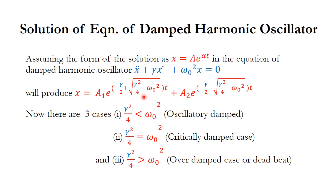Now there are three possibilities. When the term gamma²/4 minus omega_0² is positive, the square root gives a positive value, and the result is an over-damped case or deadbeat case. If the term inside the square root is negative, the square root becomes a complex value, giving an oscillatory damped case. When gamma²/4 equals omega_0² so that the term cancels, this becomes a critically damped case.